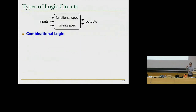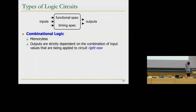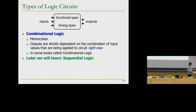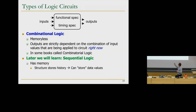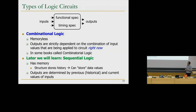There are types of logic circuits. Combinational logic is memoryless — it does not remember inputs from the past. Outputs are strictly dependent on the combination of inputs applied right now, not in the past. In some books these are called combinatorial logic. We will learn sequential logic, which has memory — it stores history, stores data values, and lets you build circuits that can remember the past and act on the future. The outputs of sequential logic are determined by previous and current values of inputs.